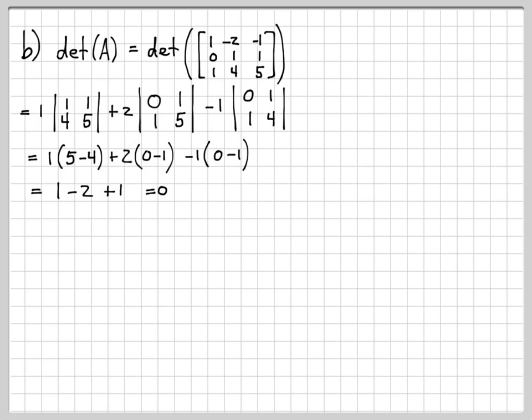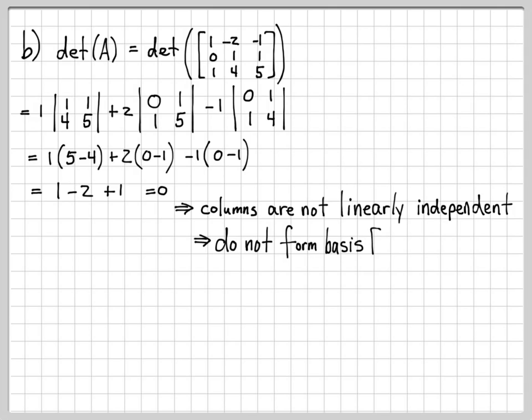So I've computed the determinant of this matrix whose columns are the vectors that we were provided. And since I got 0, that tells me that the columns are not linearly independent. It actually tells me that they are linearly dependent. Anytime you get a 0 in your determinant computation, that means that you have linearly dependent columns. So that makes it impossible for these three vectors to form a basis for R³.